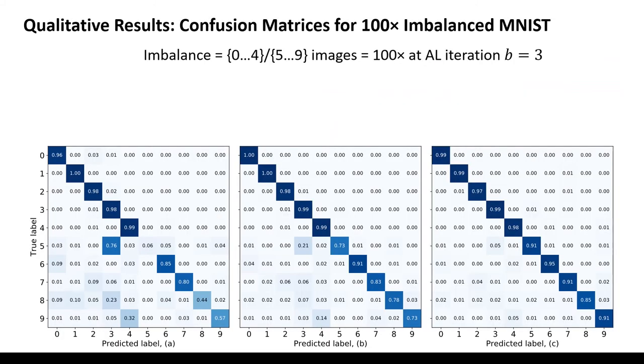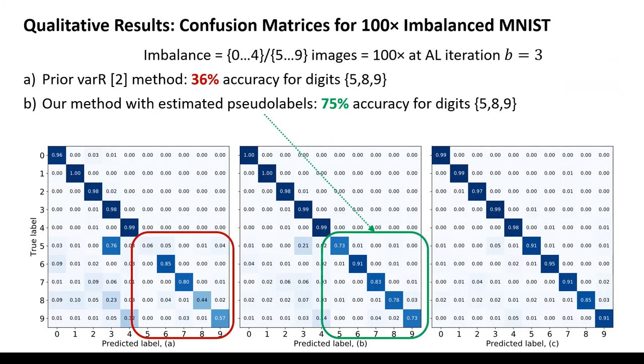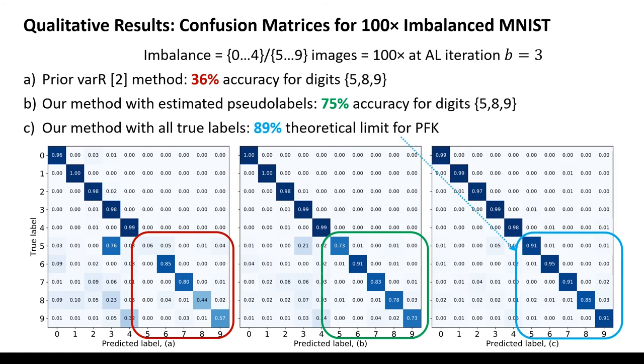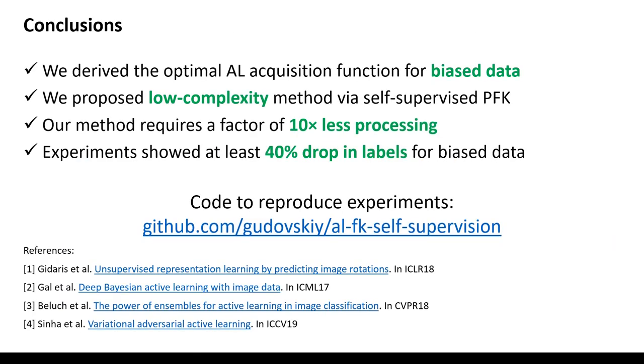Specifically, accuracy of biased MNIST classes increases from only 36% to 75%. All experiments can be reproduced using publicly available GitHub code.